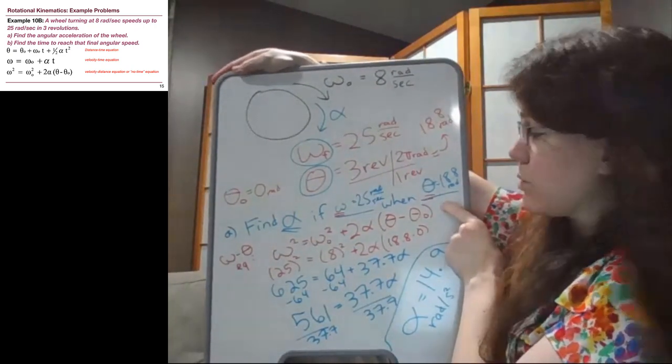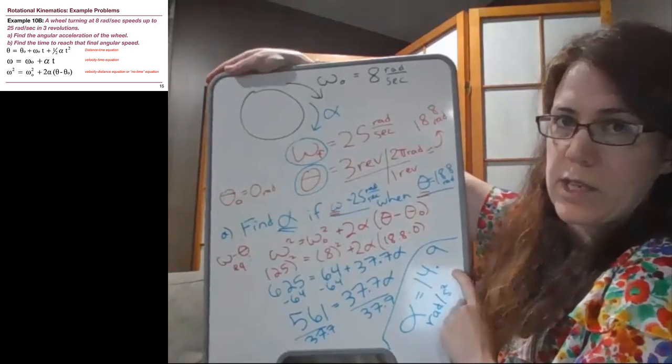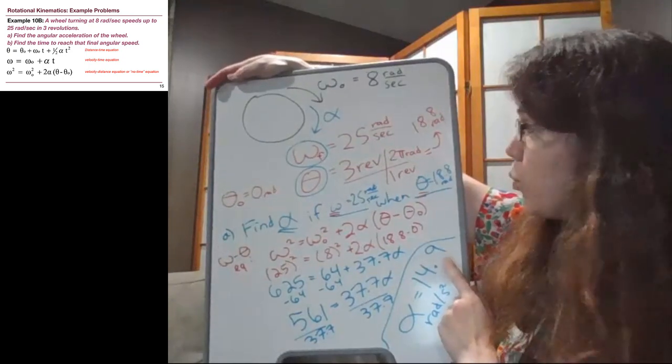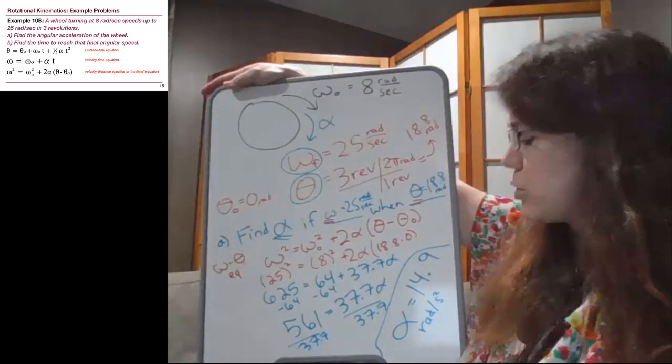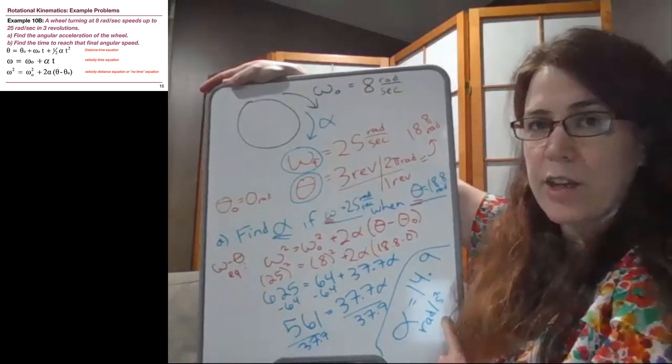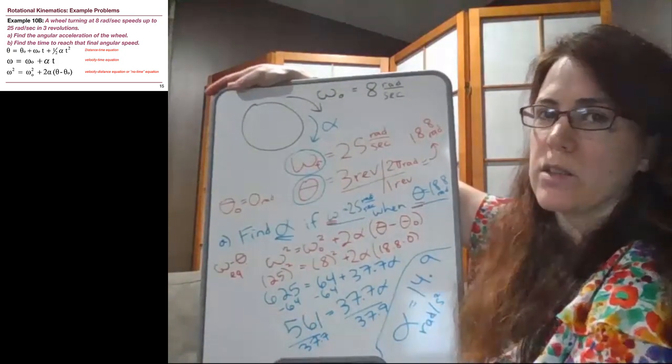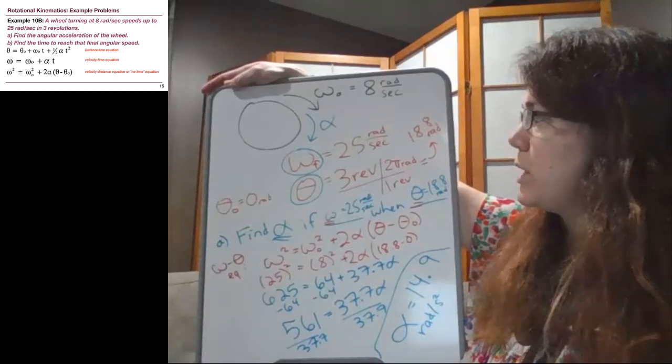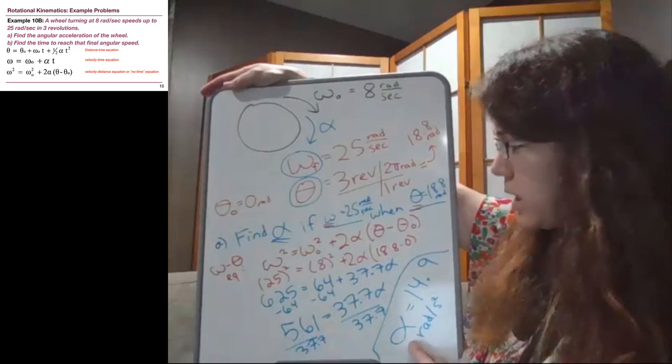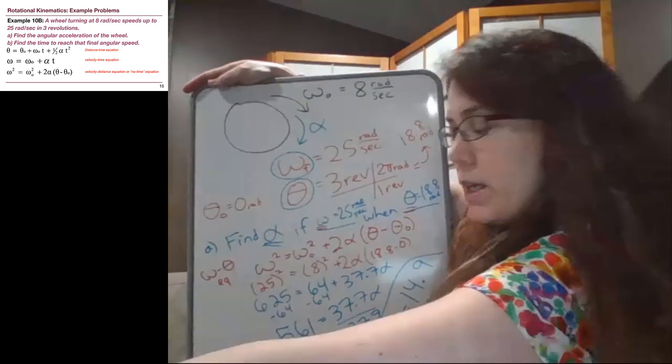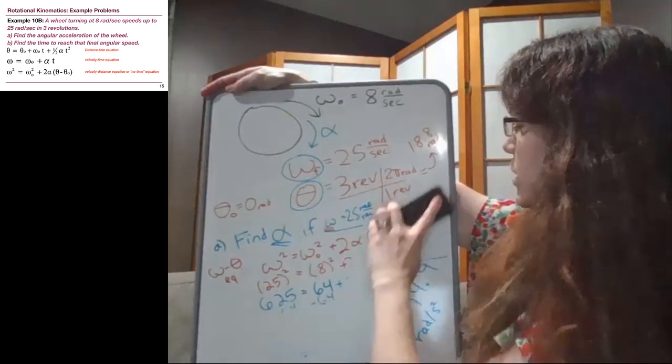Step four: pick the relevant equation. Step five: plug in all the numbers. Step six: check if this makes sense. We know it has to be positive because we're speeding up. We don't have strong intuition for these angular acceleration numbers, what are big or small. So all we can do with that common sense check is make sure the number came out positive as expected. I'm going to erase this to get part B onto the board while keeping our given information handy.